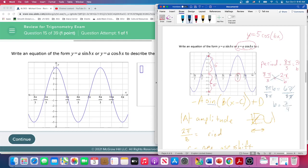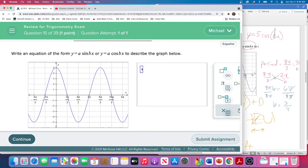Pies cancel, six over eight. That reduces, two goes into both of them. Two goes into six three times, two goes into eight four times. B is three-fourths. So y equals five cosine three-fourths x.